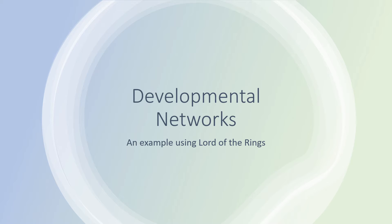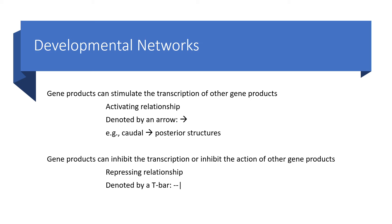Today, we'll be going over a brief explanation of how developmental networks work, using an example of characters from Lord of the Rings. A developmental network is a way in which gene products in an organism activate or inhibit the transcription or actions of other gene products. This is the way in which organisms can use multiple genes to create phenotypes.